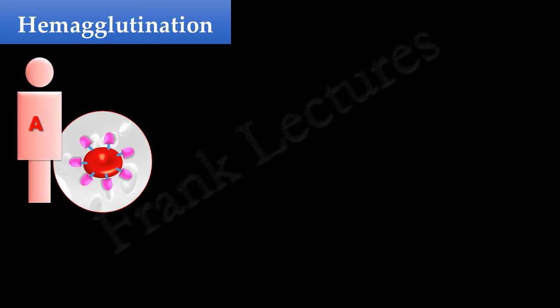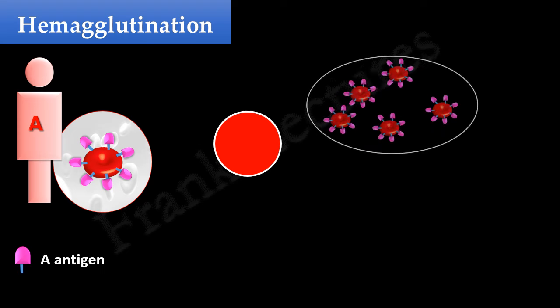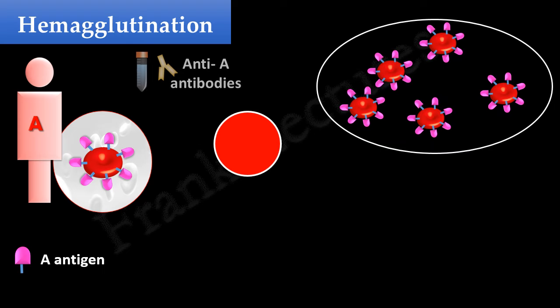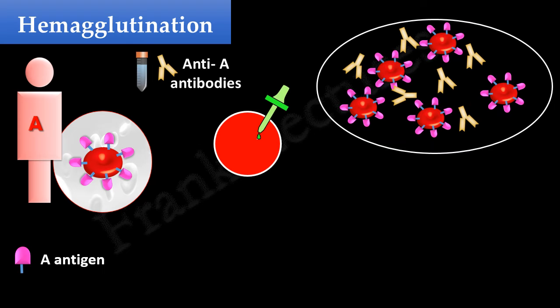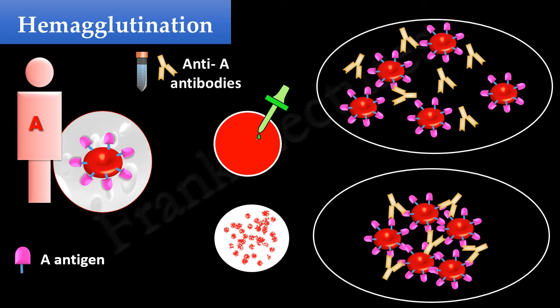Suppose we have an individual with blood group A. That means his RBCs have A antigens on their cell membrane. We put a few drops of blood from this person on a glass slide and then add anti-A antibodies. We will mix them. After some time, red granules are visible. These granules are the result of clumping of RBCs.